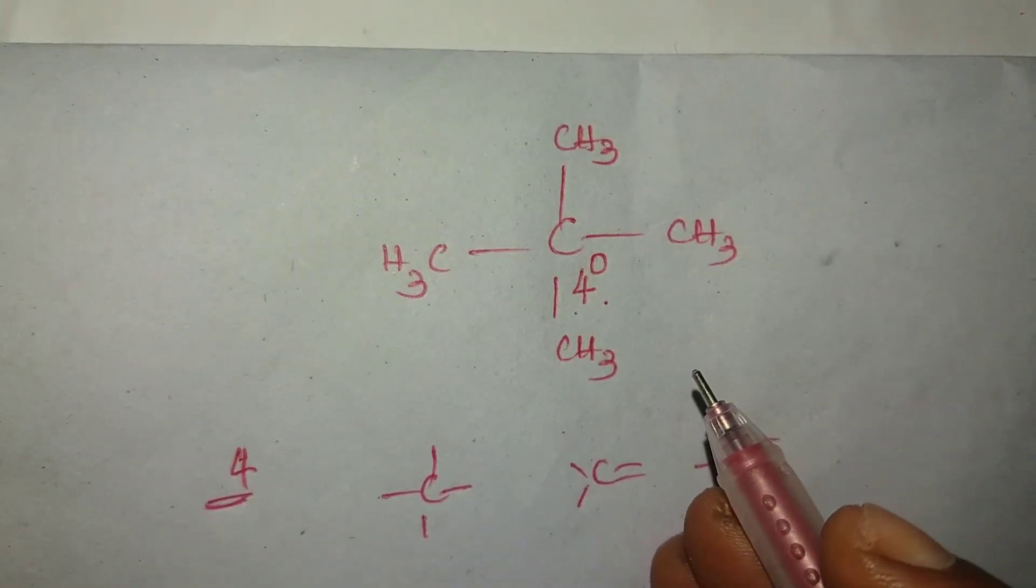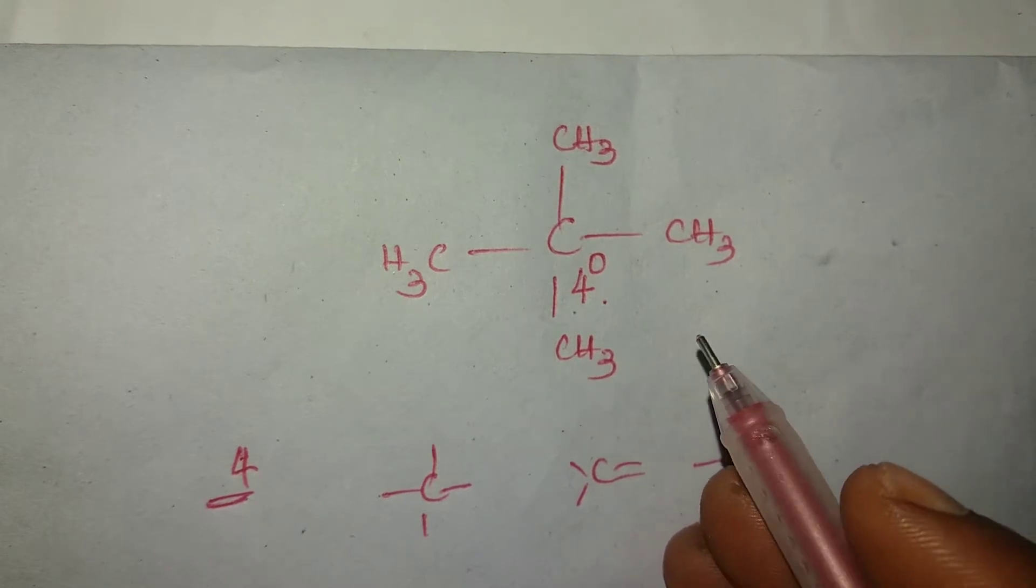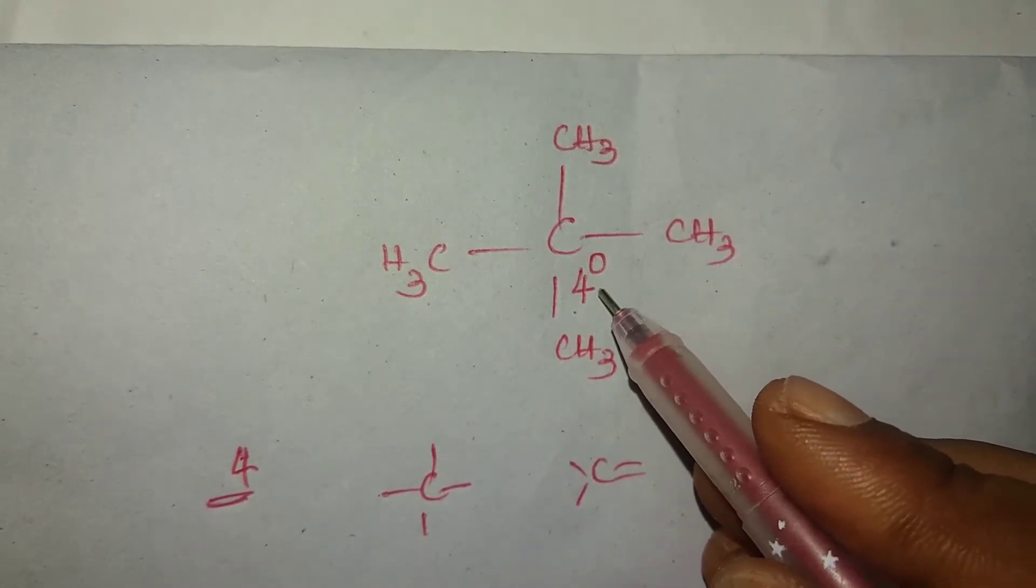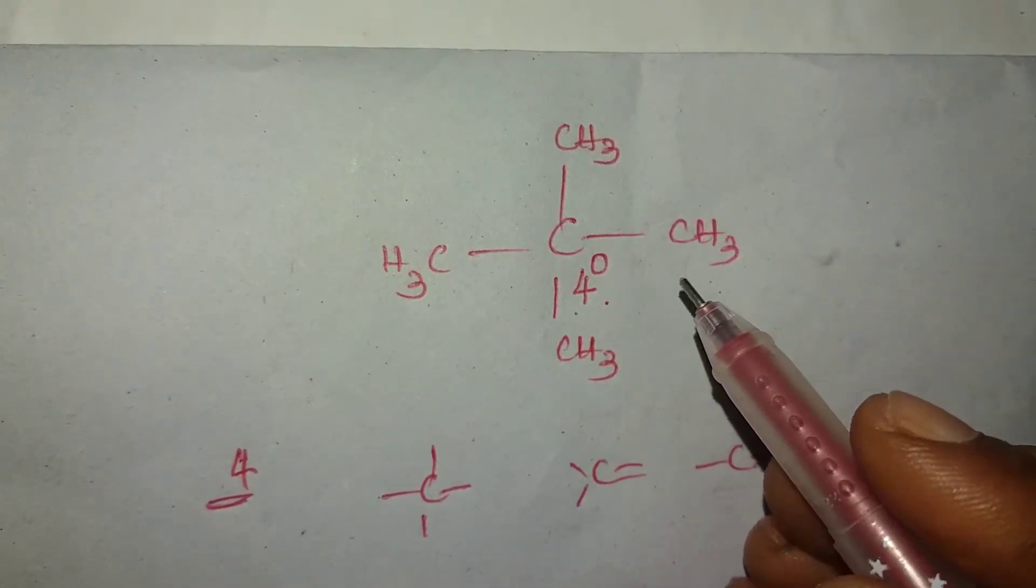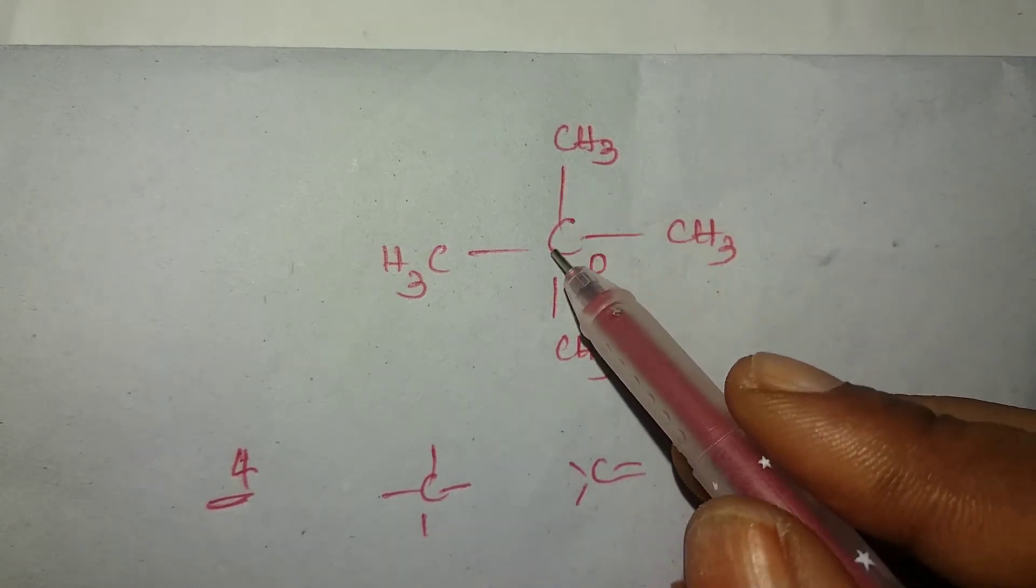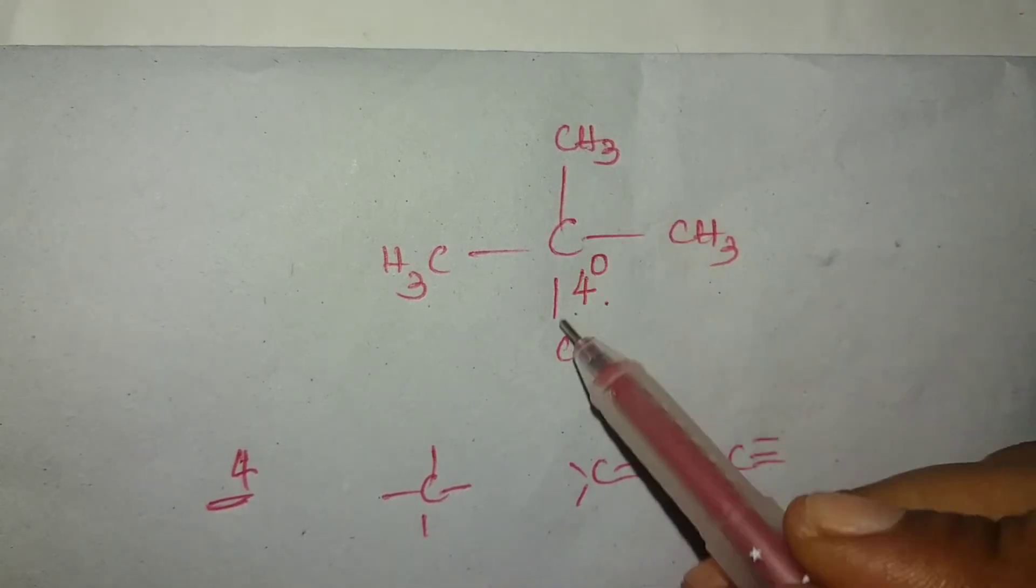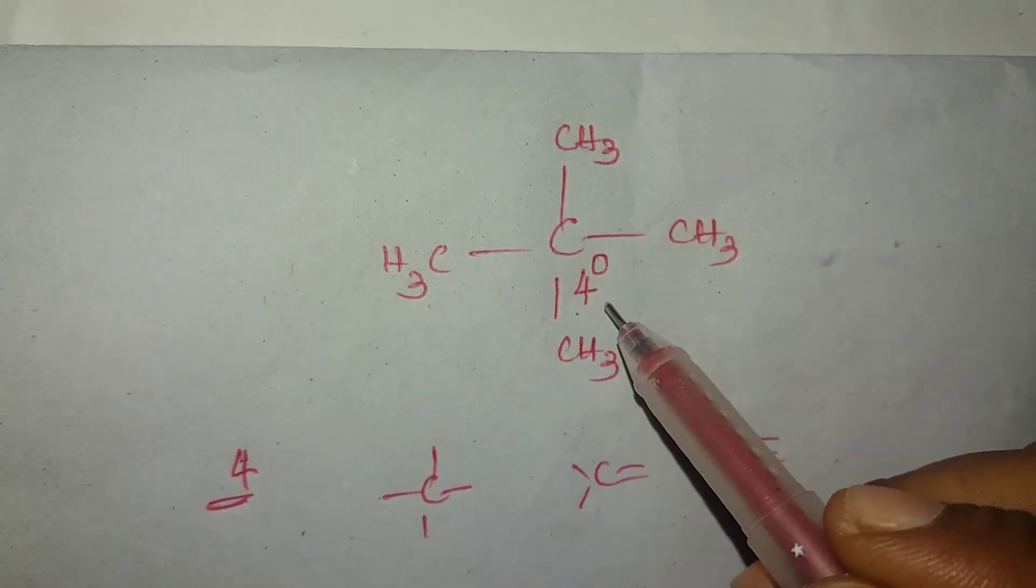Hello students, I am Eva K Madam. So many students asked me: is quaternary hydrogen and quaternary alcohol possible or not? Here, this is the quaternary carbon because it is attached to four another carbon atoms.